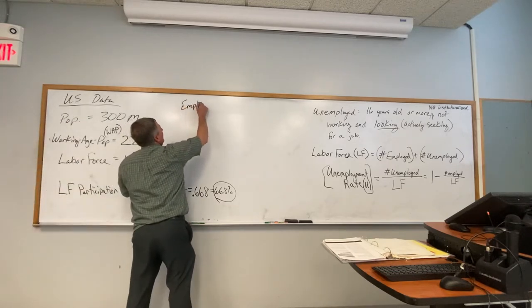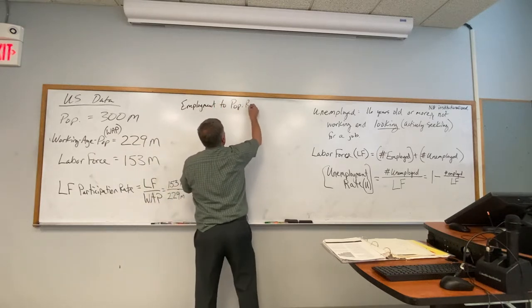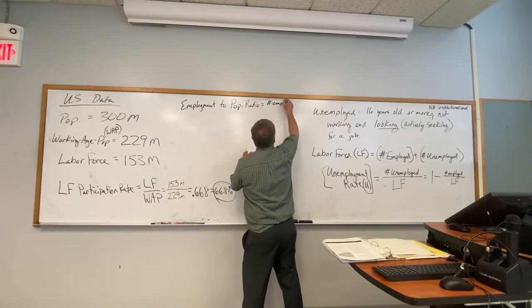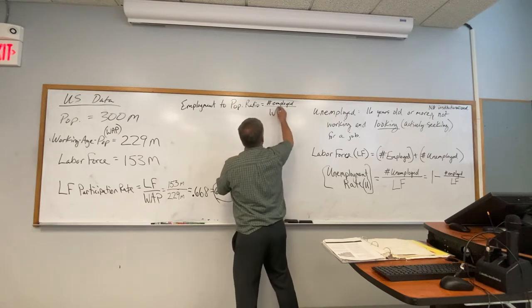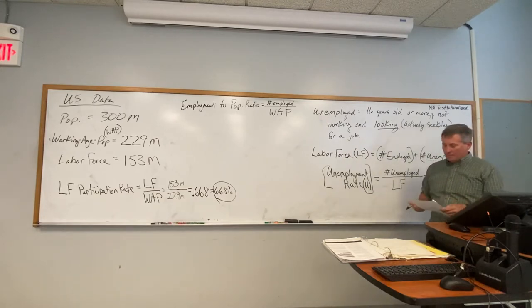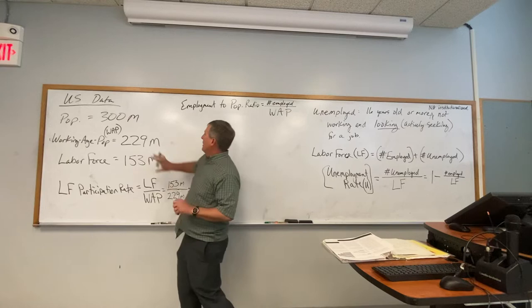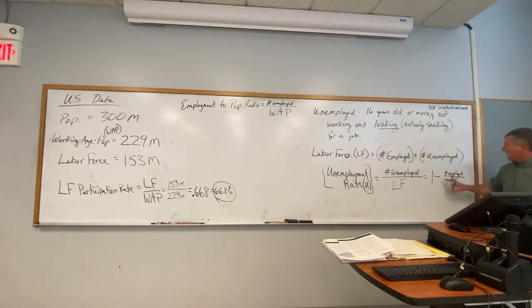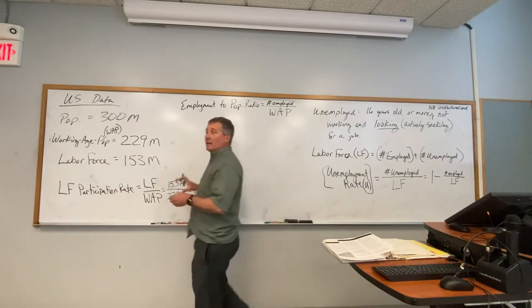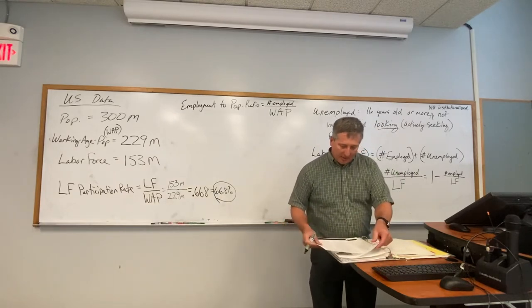Our last statistic here is the employment-to-population ratio, which equals the number of people employed divided by the working-age population. So how many people are working as a part of the working-age population? Notice it's similar to the employment rate, but here we've got kind of the whole population in mind rather than just the labor force.